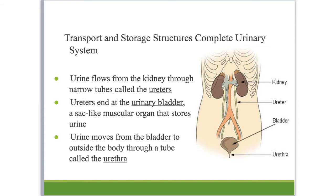Along with the kidneys, we have several transporting and storage structures. Urine flows from the kidneys into narrow tubes called ureters — one from each kidney. The ureters end at the urinary bladder, which is a sack of muscle that stores urine. The urine then moves from the bladder to outside the body through another tube called the urethra.